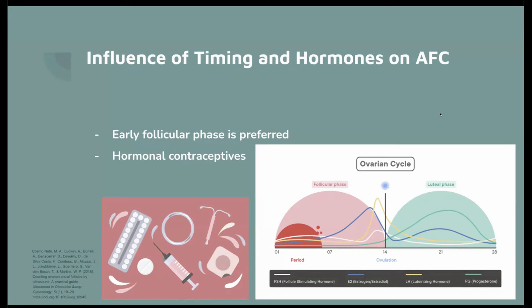Another thing useful to know about AFC counts is whether women are using hormonal contraceptives, because this can change how many follicles are actually maturing. Some hormonal contraceptives can decrease follicle levels, but that doesn't mean they'll enter menopause early or are not good candidates for IVF. In those cases, if a patient is on hormonal contraceptives and has a low AFC, you can suggest going off it for a couple of months and retesting. If the AFC is high while on contraceptives, that number can still be used as a good predictor.